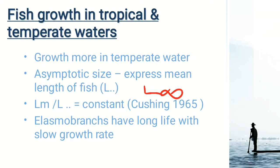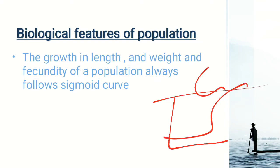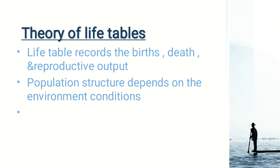These are the important points in stock structure analysis. Biologically, growth in length, weight, and fecundity of a population always follows a sigmoid curve, which is dependent on carrying capacity. The theory of life tables is important because life tables are statistics that relate two factors: life expectancy and mortality. Life expectancy is the period of time an organism is expected to live, and mortality is the death rate. Life tables provide data on mortality and fertility of a particular organism, making them important in fish population studies.